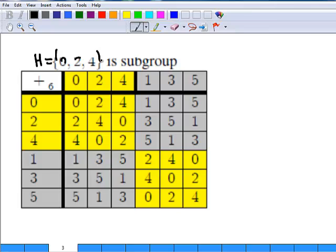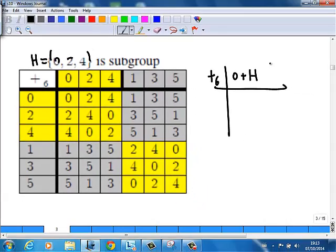So if you look at this table formed by this subgroup, you notice that you actually have a group like this - addition modular 6. The first one is 0 plus H, because 0, 2, 4 is just H. And 1, 2, 5 is 1 plus H.